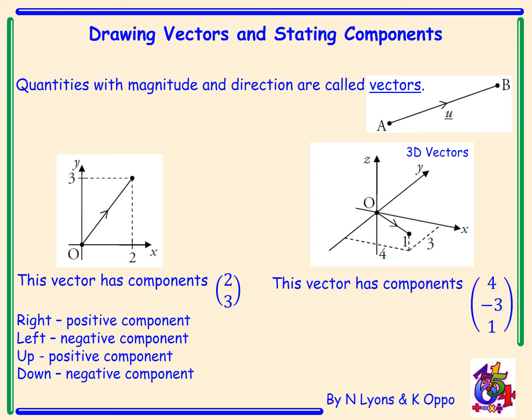This vector here has components 4, minus 3, 1.